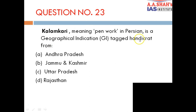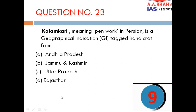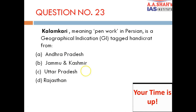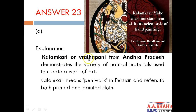Question 23: Kalamkari — meaning pen work in Persian — is a GI tagged handicraft from A. Andhra Pradesh. The correct answer is A — Andhra Pradesh. Kalamkari, also called Vrathpani, from Andhra Pradesh demonstrates a variety of natural materials used to create the work of art. Kalamkari refers to both printed and painted cloth.